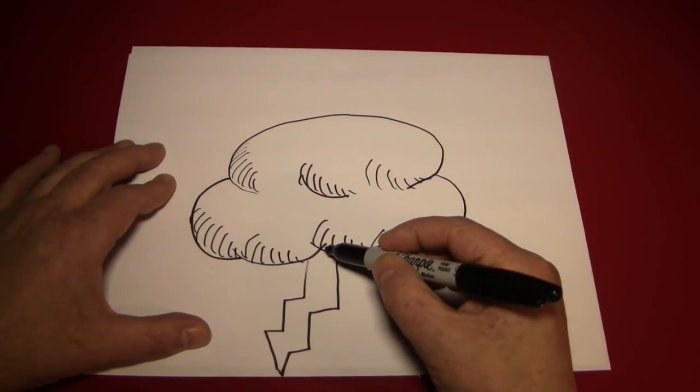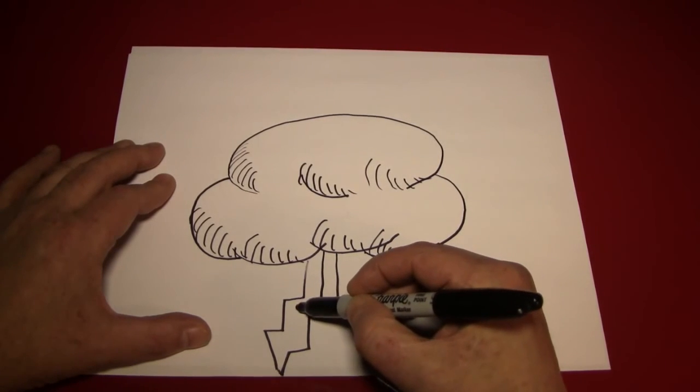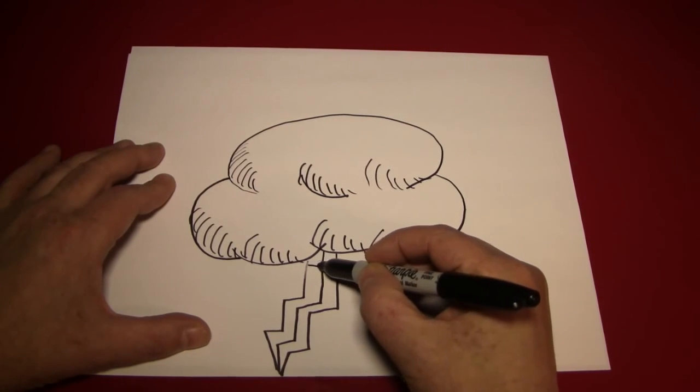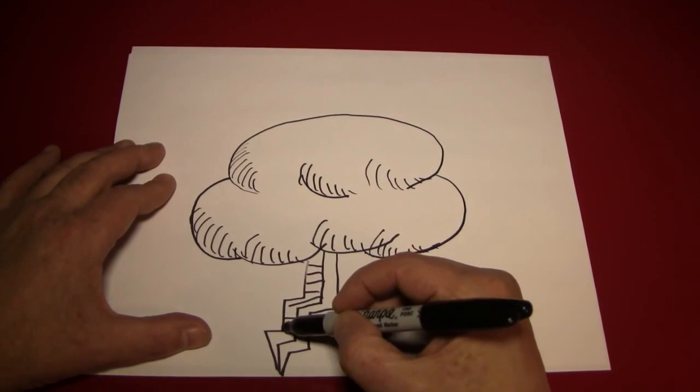Then what you can do is put a line down the center, like thus. And make little hash marks on half the lightning bolt. Why not?